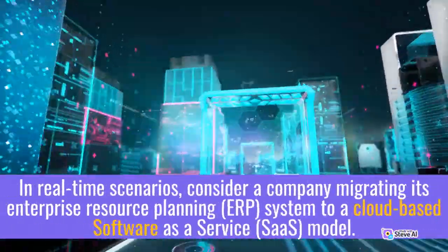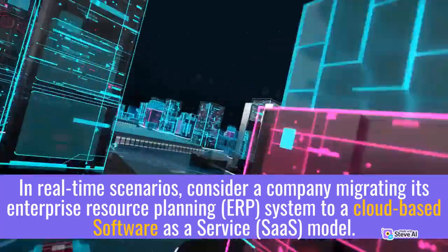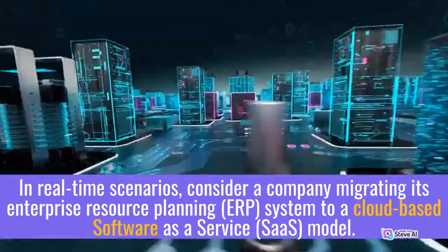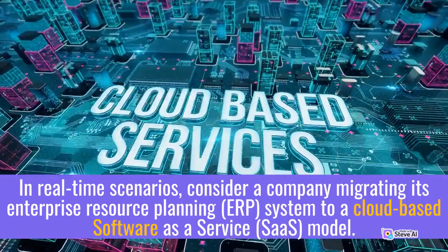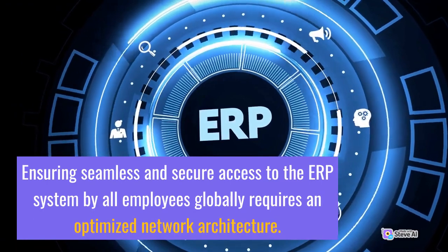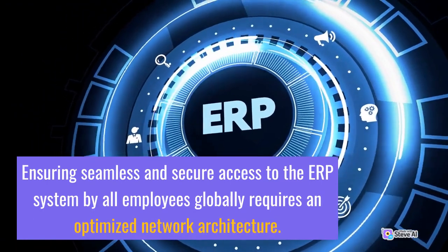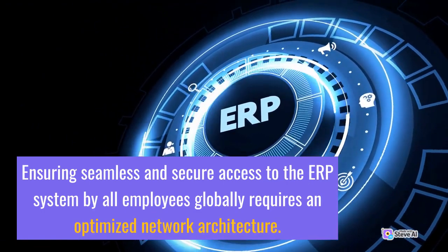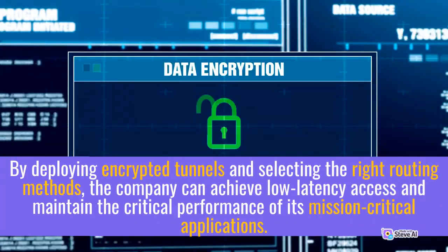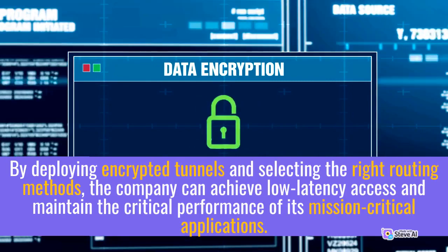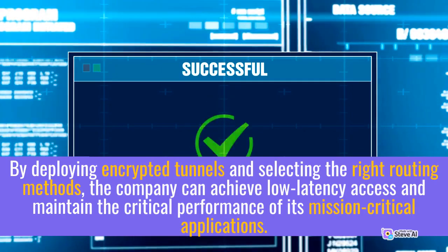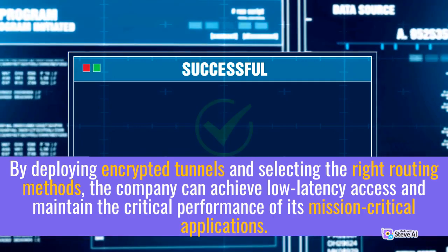In a real-time scenario, consider a company migrating its enterprise resource planning system to a cloud-based software as a service model. Ensuring seamless and secure access to the ERP system by all employees globally requires an optimized network architecture. By deploying encrypted tunnels and selecting the right routing methods, the company can achieve low-latency access and maintain the critical performance of its mission-critical applications.